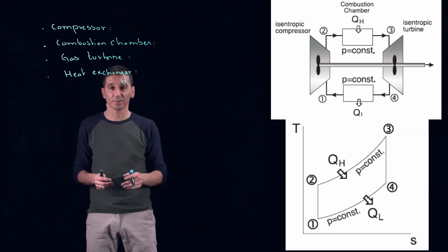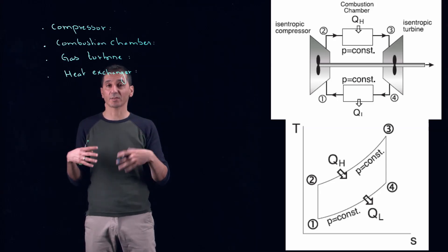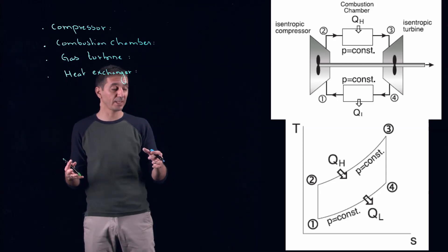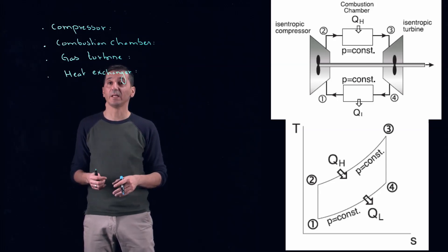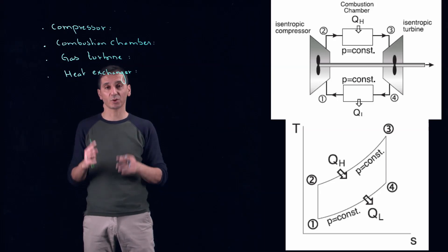Then we have combustion chambers. The combustion chambers, we are adding heat, and the process will be isobaric. P is equal constant from two to three, ideally. Then we reach our maximal pressure, maximal temperature. We are ready to generate power.